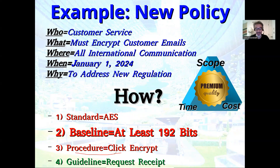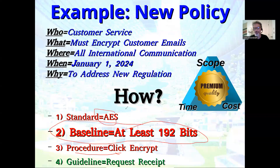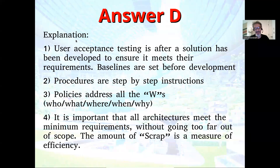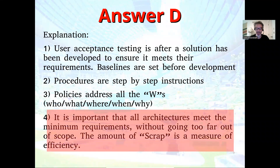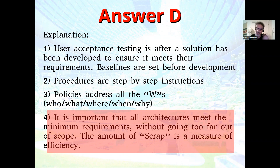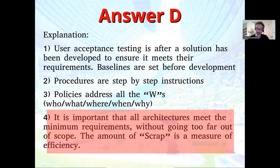The procedure is how to encrypt, and in the guidelines you might want to request a receipt. But we have to set these baselines, because just saying 'we use AES' isn't enough — do you do at least 192? The answer is it's important that all architectures meet the minimum requirements without going too far out of scope. Maybe I could wear a 34 or even a 44, but that's going to create a lot of scrap. That's really the difference — CMM level one gets it effectively done, but by the time you get to level four, you measure time, money, and what people don't like to measure: scrap. If you can reduce the scrap, you're a lot more efficient.